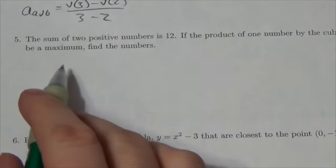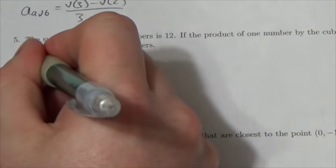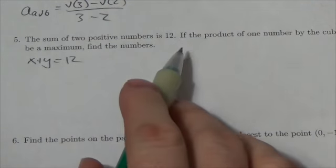Okay, written response number 5. The sum of two positive numbers is 12. Okay, let's just do that. The sum of two positive numbers is 12, and so x and y I think are the obvious choices here.